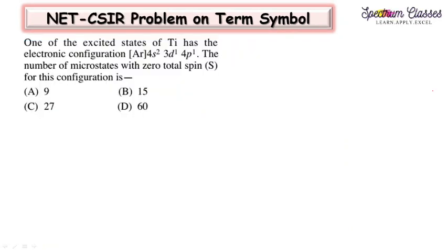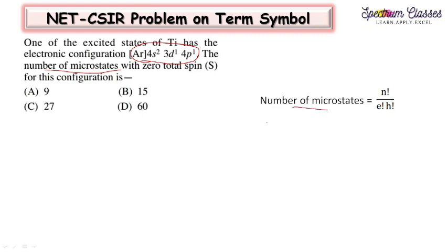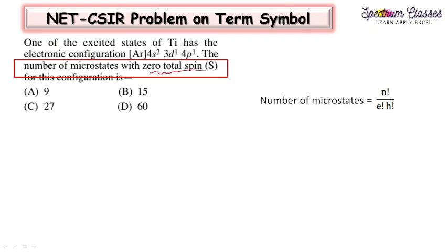One of the excited states of titanium has the electronic configuration [Ar] 4s¹ 3d¹ 4p¹. The number of microstates with zero total spin S = 0 is asked. When you see 'number of microstates' you might use the standard formula, but here the key statement is 'with zero total spin' — this is the important hint given in the question.